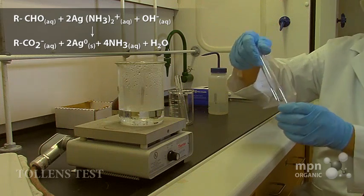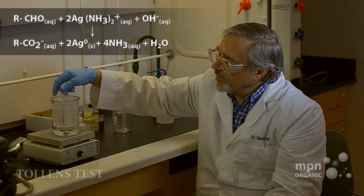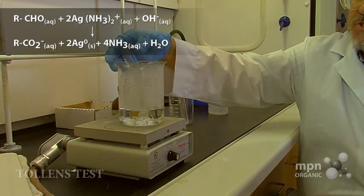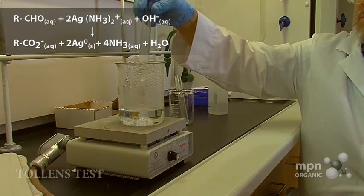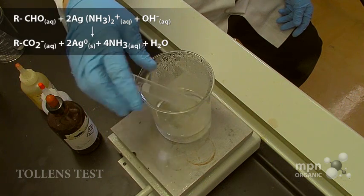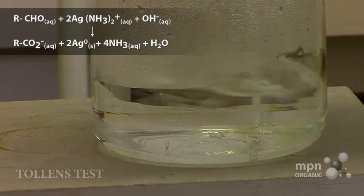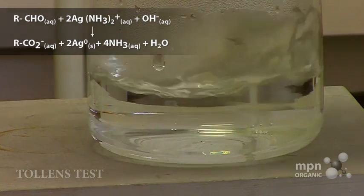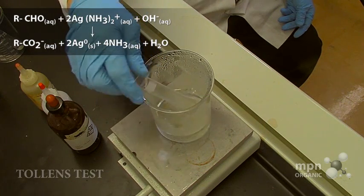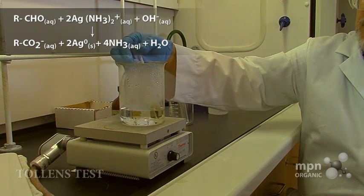Mix that up, and then we're going to heat it. The heating is the trick. You could leave this to its own devices, and it would eventually form what we describe as a silver mirror. But we're going to heat it up, and we should be able to get the silver mirror to form.